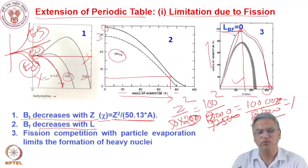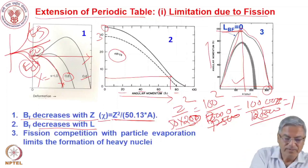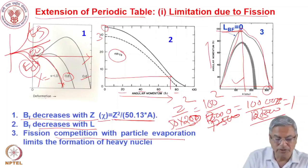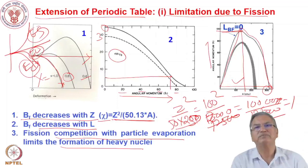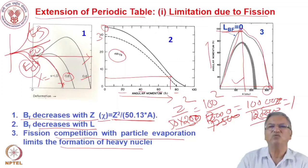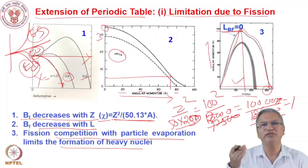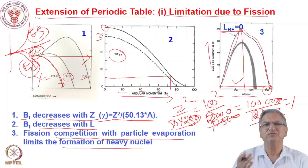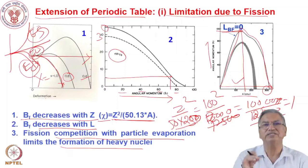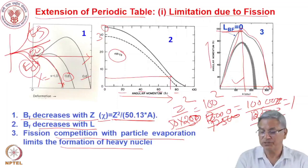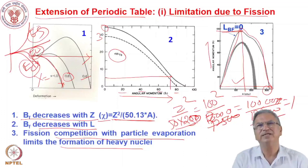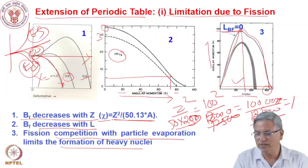That puts a limit on extending the periodic table. The third limitation is competition with particle evaporation, which limits the formation of heavy nuclei — fission competes with particle evaporation and puts a limitation on the survival of heavy elements. There are different ways to reduce particle evaporation, such as using what we call cold fusion, where you produce a compound nucleus with very low excitation energy. I just wanted to give you a feel for what are the limitations in extending the periodic table.